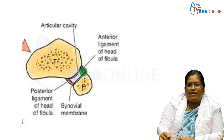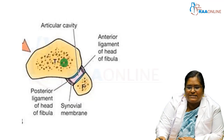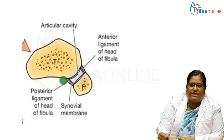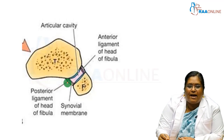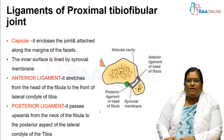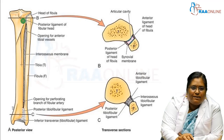The next ligament is the anterior ligament of the tibiofibular joint. It stretches from the head of the fibula to the front of the lateral condyle of the tibia. The posterior ligament of the proximal tibiofibular joint passes upward from the neck of the fibula to the posterior aspect of the lateral condyle of the tibia.